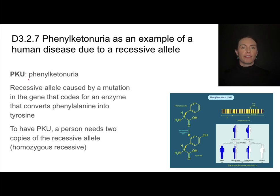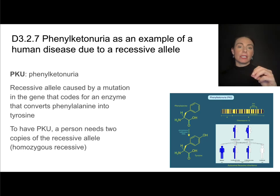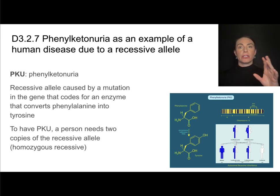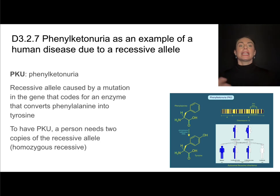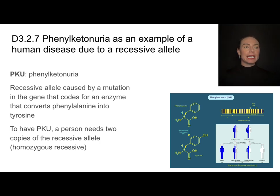PKU stands for phenylketonuria, and it is caused by a recessive allele resulting from a mutation in a gene that codes for an enzyme. This enzyme converts the amino acid phenylalanine into tyrosine, so both of these are amino acids.